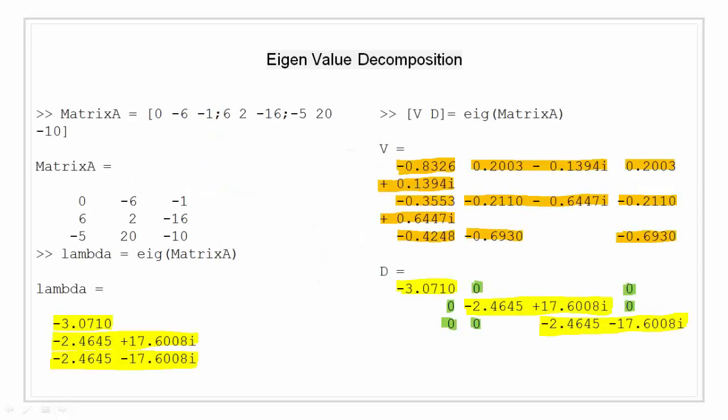Now we will take the same matrix that we worked on before with elements 0, minus 6, minus 1, 6, 2, minus 16, minus 5, 20, and minus 10. For this matrix, we can calculate both the eigenvalues and the eigenvectors using the function eig. First, we can see the eigenvalues of matrix A by passing it to function EIG. Hence we get lambda and this is our eigenvalues. These values are highlighted in yellow.